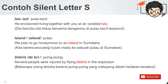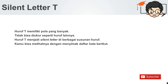Lalu, 'debris' — puing-puing. Several people were injured by flying debris in the explosion. Beberapa orang terluka karena puing-puing yang melayang dalam ledakan tersebut. Ini adalah tiga kata di mana kita tidak perlu mengucapkan huruf S-nya. Untuk silent letter T, ini memiliki pola yang cukup banyak dan tidak bisa diukur seperti huruf lainnya — kamu perlu melihatnya dengan menyimak daftar kata yang diberikan.